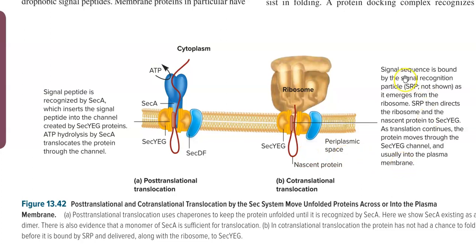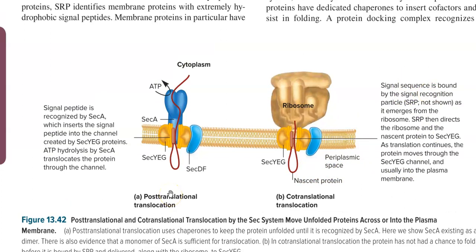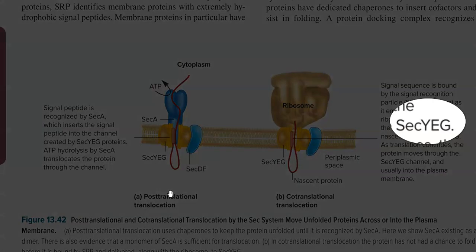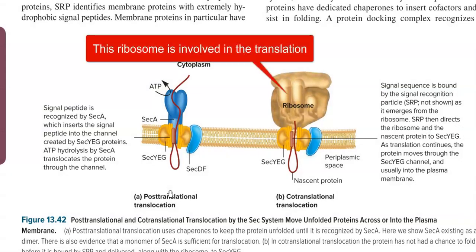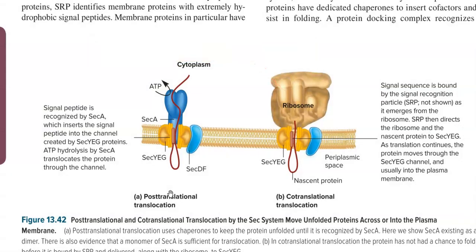In co-translational translocation, the signal sequence present at the N-terminal of the nascently formed polypeptide is recognized by the signal recognition particle as it emerges from the ribosome. The signal recognition particle then directs the ribosome and the nascent protein to attach to the Sec protein — that is, SecYEG. As translation continues in the ribosome, translocation is mediated by the SecYEG channel, which moves the protein to the plasma membrane.